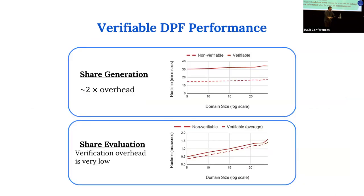The performance overhead of this verification method is very low. Share generation has roughly 2x overhead because the client resamples when the predicates at the shares of beta are equal — they need to be unequal for the correction to work. Share evaluation overhead is very low: referring back to the GGM tree, this is basically equivalent to performing one extra level in that tree.